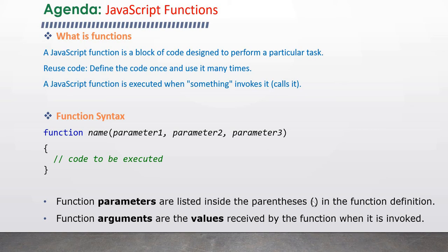Function parameters are listed inside the parentheses in the function definition. Function arguments are the actual values received by the function when it is invoked. If you have parameters in your function, when you call the function you have to pass actual values — those are called arguments. If you have parameters one, two, three, you have to pass three values, which are the actual values.